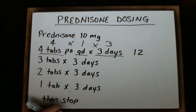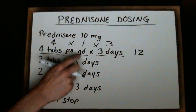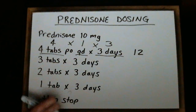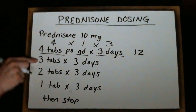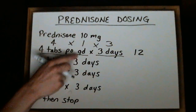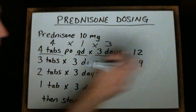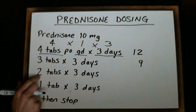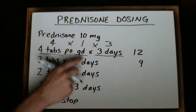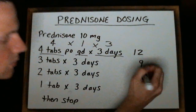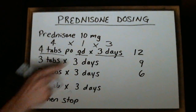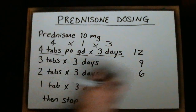We do the same thing as we work our way down. Some providers will write their prescriptions in shorthand and won't write POQD on every line, so it's implied that QD applies to each line. We then take three tablets, multiply by one for QD, and multiply by three for three days — nine tablets for the second line. For the third line, two tablets times once a day times three days gives us six. And one tablet times once a day times three days gives us three.